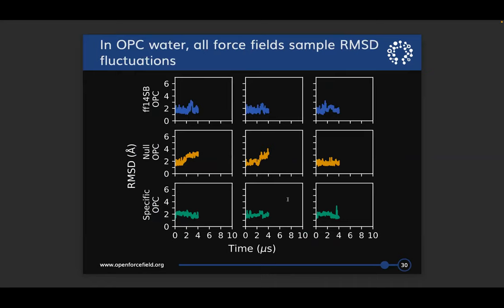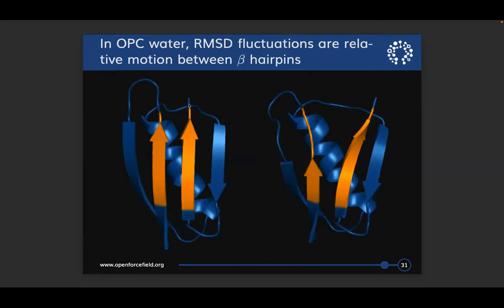The same RMSD traces in OPC water, now at about four microseconds — already exceeding the point where we see unfolding in TIP3P — show that all four force fields sample some fluctuations in RMSD, maxing out at about three angstroms compared to experiment. None of those fluctuations are caused by alpha helix unfolding; they're all caused by relative motions between beta hairpins. Because these are two parallel hairpins that are then anti-parallel on the other side, some fluctuation is expected, and the key question is how much.